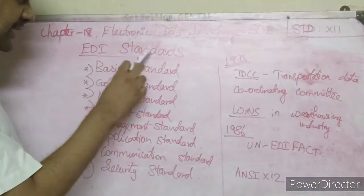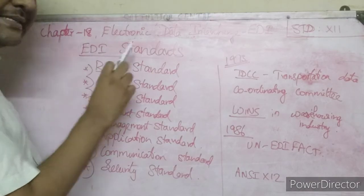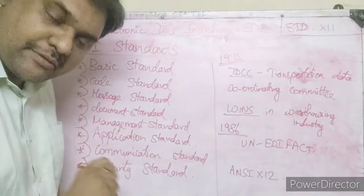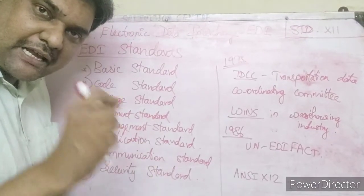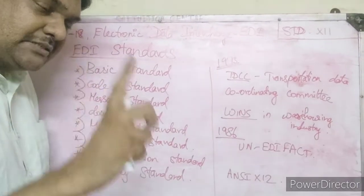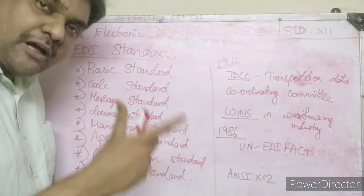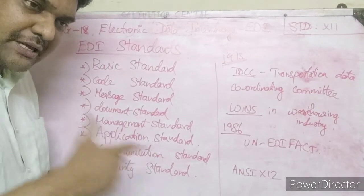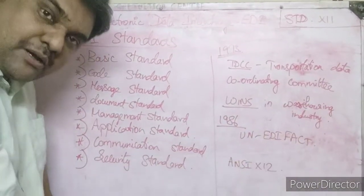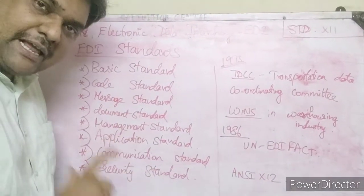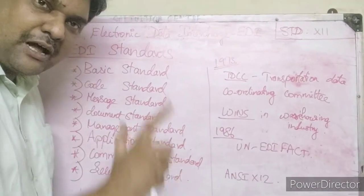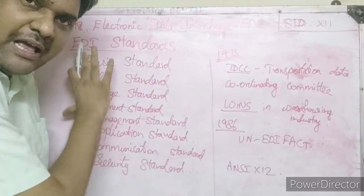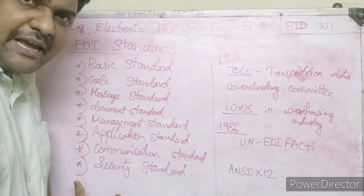Hello children, today we are going to see the next topic in chapter 8: EDI Standards. EDI stands for Electronic Data Interchange — the electronic transfer of business documents from computer to computer using a globally accepted standard format, so that the standard format can be understood by everybody. That is called an EDI standard.